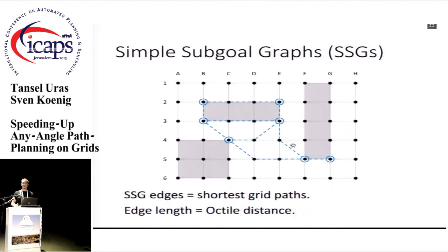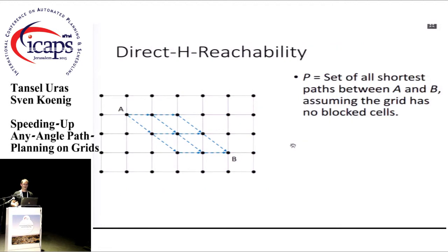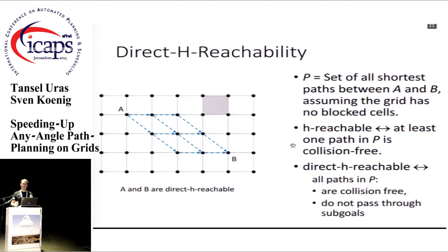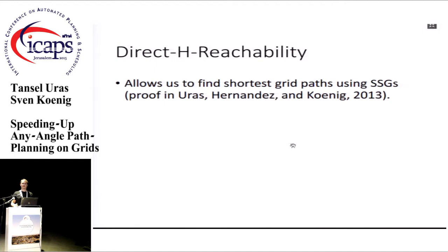The edges in the sub-goal graph correspond to shortest grid paths, so their length is the octile distance between the vertices they connect. To define direct edge-reachability: given two vertices A and B on a grid with no obstacles, the set of all shortest paths between them forms a parallelogram-shaped area. If any of these paths is unblocked in the actual grid, A and B are edge-reachable. If all paths are unblocked and none contain intermediate sub-goals, they are direct edge-reachable.